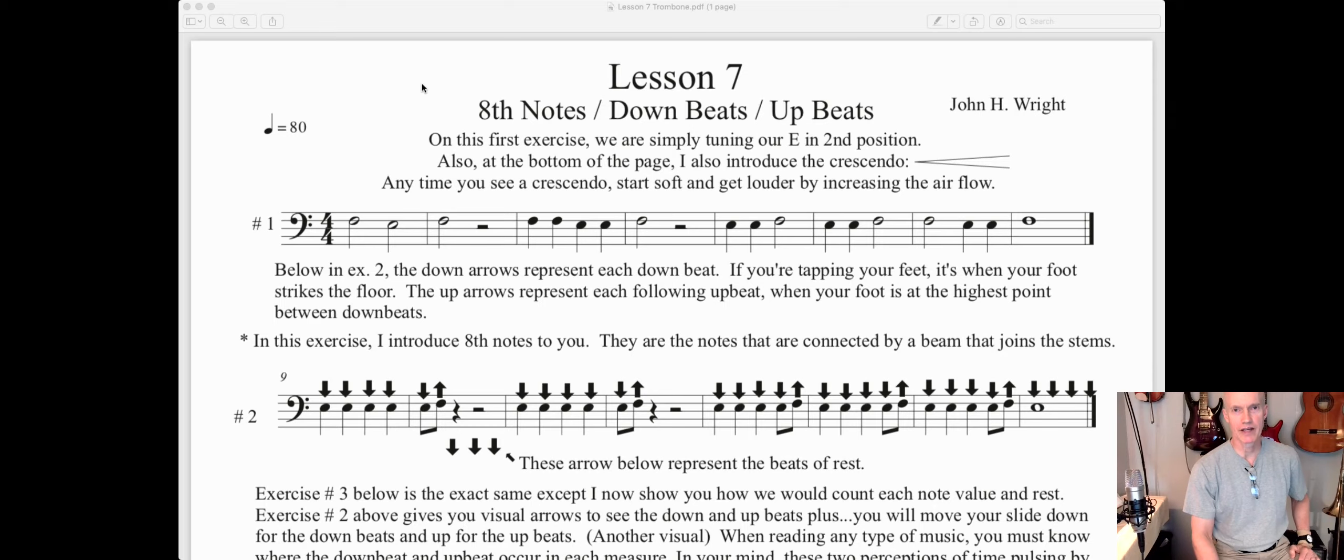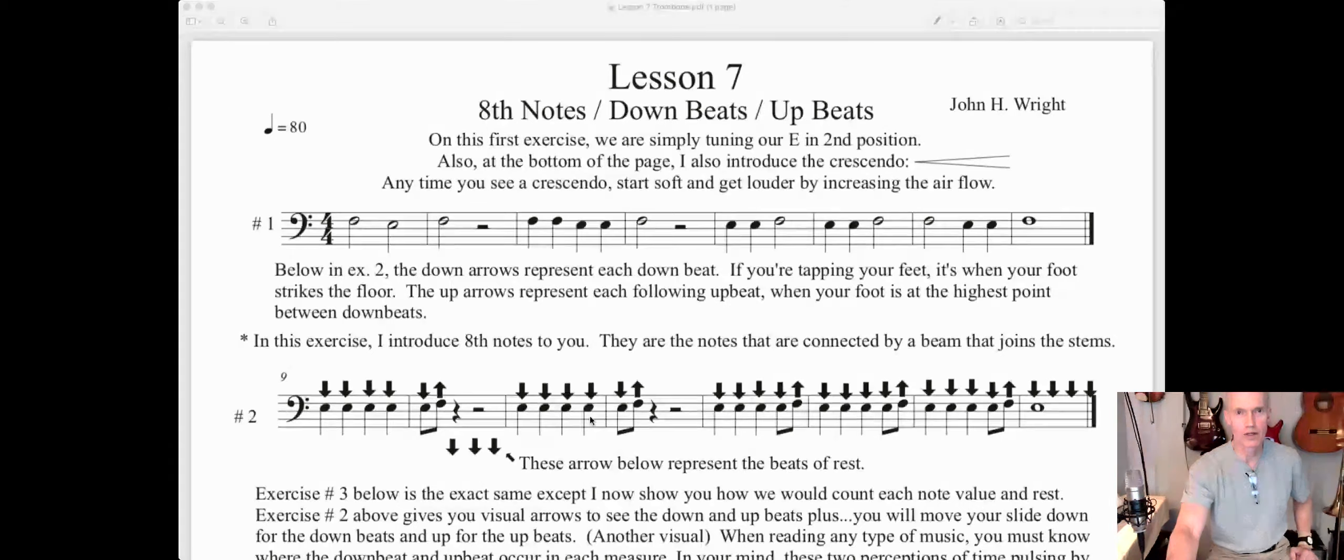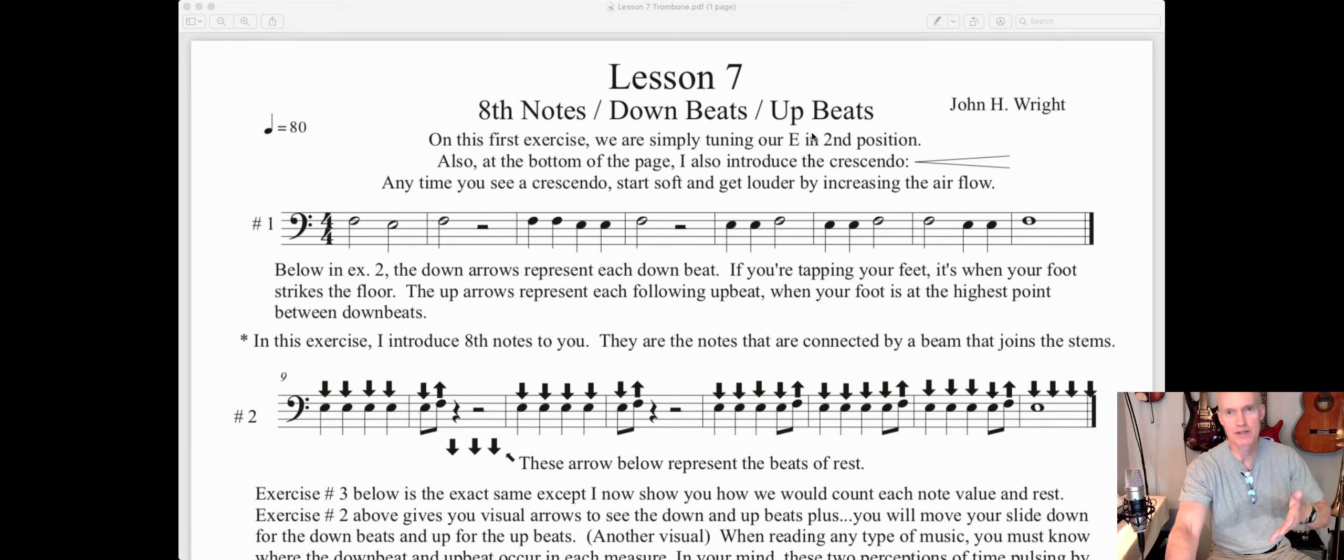All right people, Mr. Wright here again with Lesson 7 for the trombone. In this lesson we'll be learning about eighth notes, how they're twice as fast as a quarter note. We'll also be working on and understanding what a downbeat is and an upbeat, which is important for reading notation.